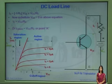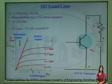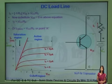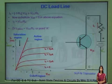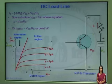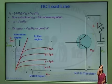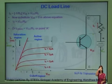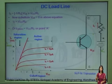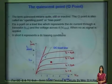That gives a second point called point B, which is placed on the output characteristics curve of the common emitter configuration. Now there are two points available: point A and point B. If I join these two points with a straight line, that is called the DC load line.